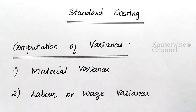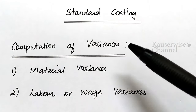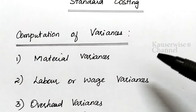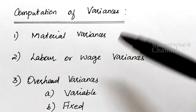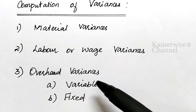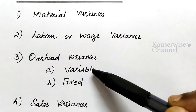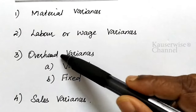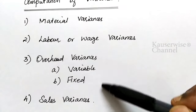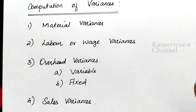In standard costing, after establishing standard cost and actual cost, the important calculation is computation of variances — finding the difference between actual and standard. There are four major categories of variances: first, material variances; second, labor or wage variances; third, overhead variances, which can be classified into variable and fixed; and fourth, sales variances. These four components give detailed information to management in order to control cost.